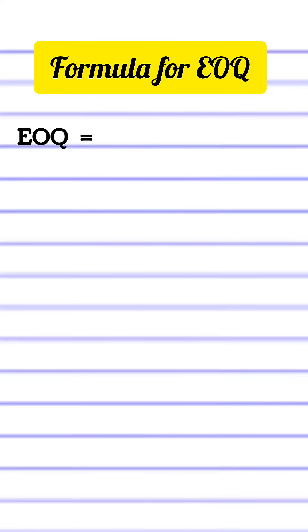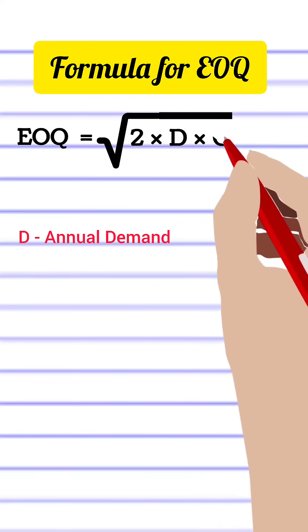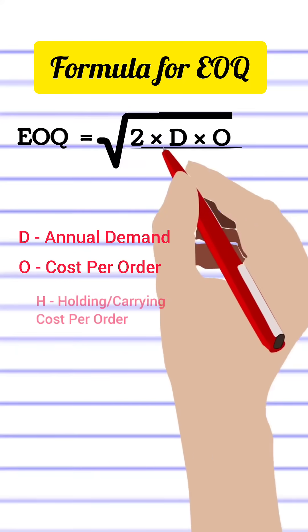Formula for economic order quantity is equal to the square root of 2 into annual demand into cost per order divided by holding cost.